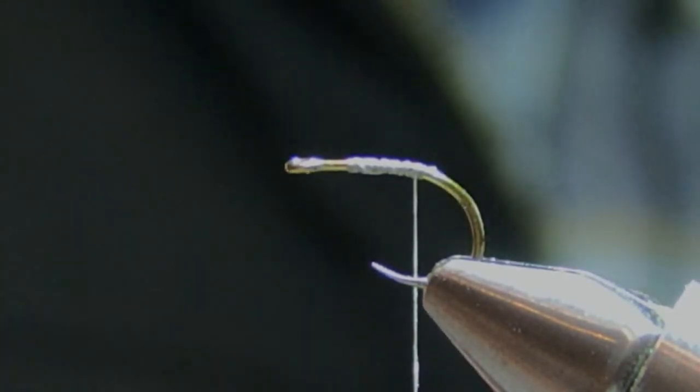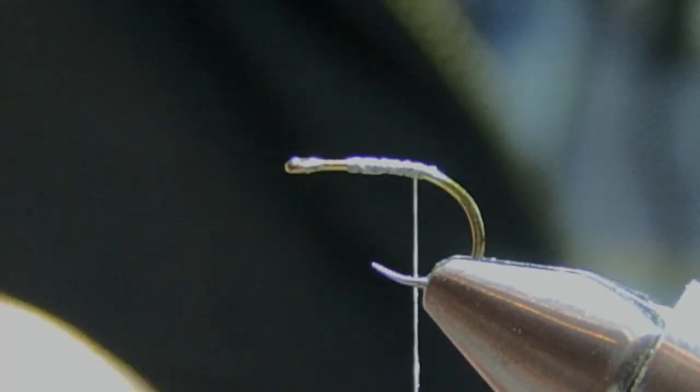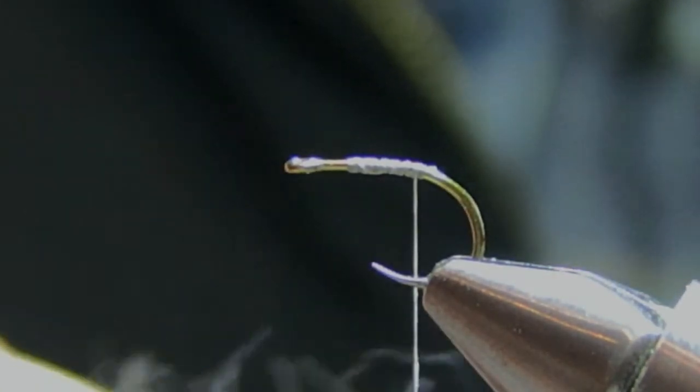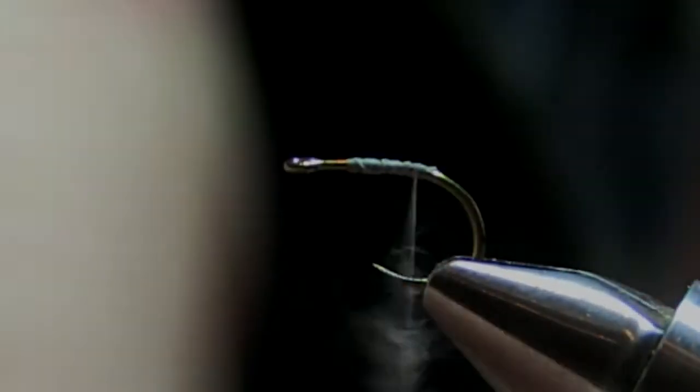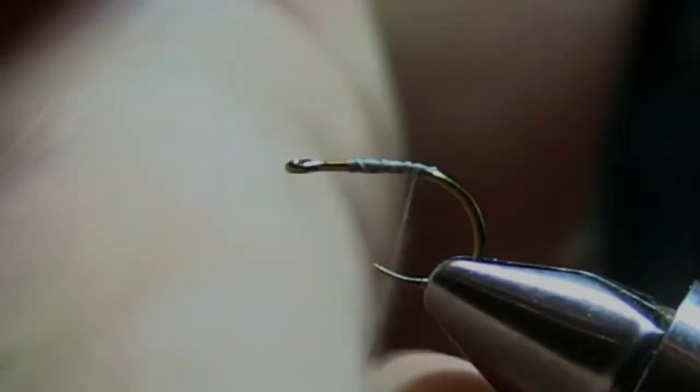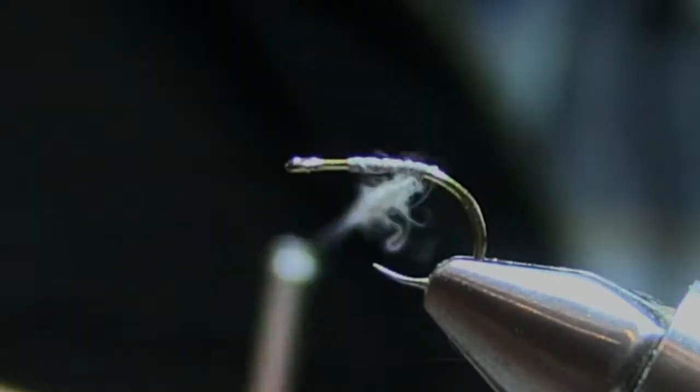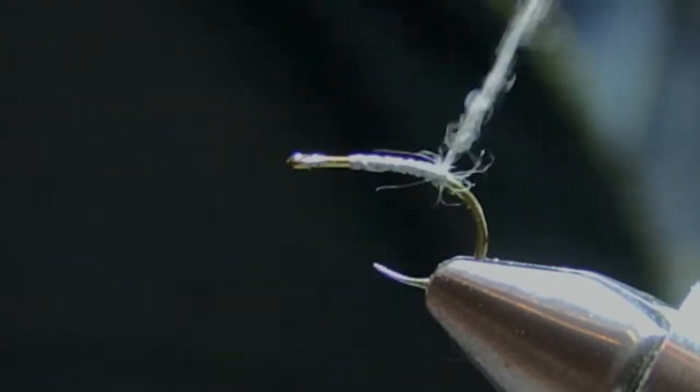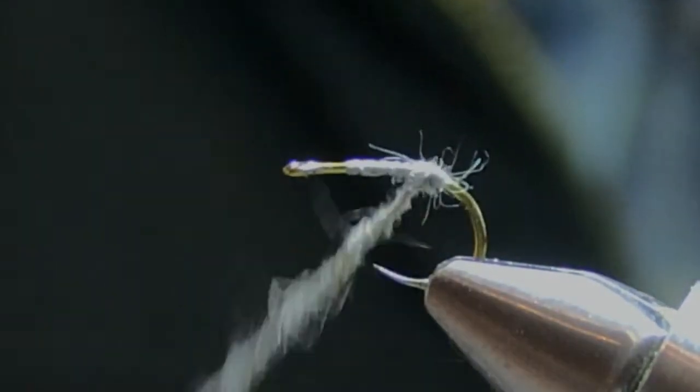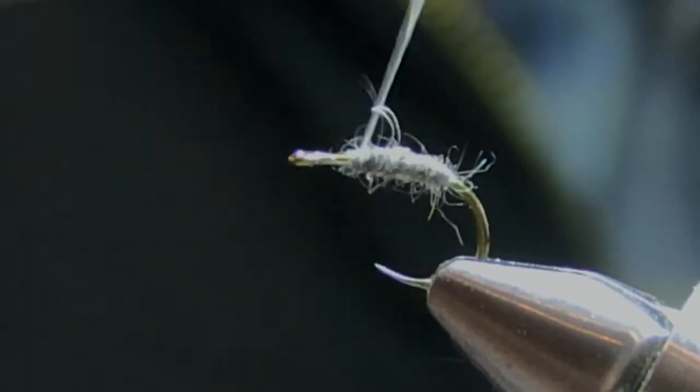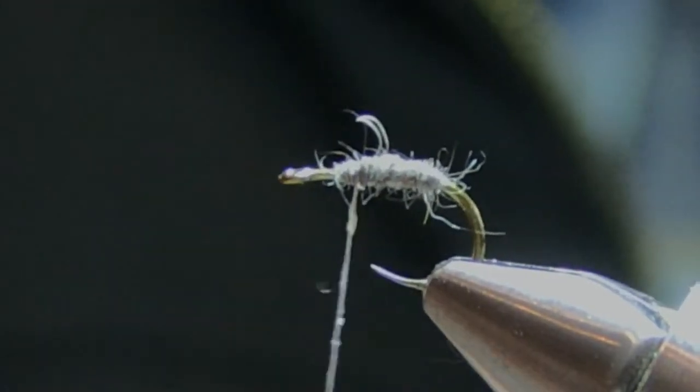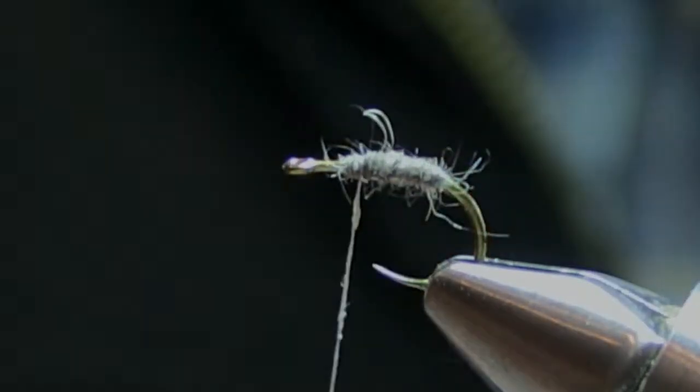Now we're using just a fine rabbit dubbing here, a slightly darker grey, but I like fine dubbings for these because we do put on a fairly tight body. So we just dub that on and then we'll tie in the body, and the body is actually only going to come up about 50% of the length of the hook because if you're not careful you can actually crowd out the head. So quite a small bit of dubbing in that.